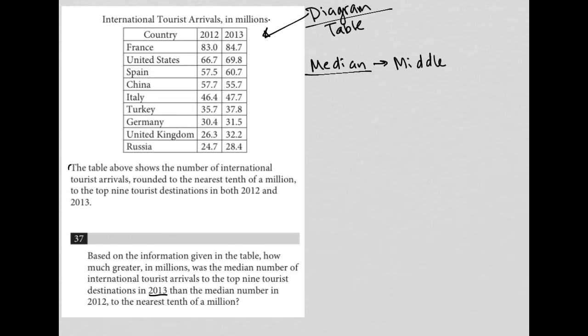But let's do that in the table. So the smallest number in this table is 28.4. The largest number is 84.7. So the next smallest is 31.5. The next largest is 69.8. And then we have 32.2 and 60.57 or 60.7. And then we have 37.8 and 55.7. So the median number is 47.7 for 2013.